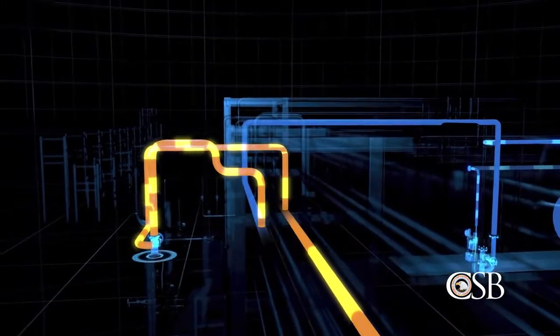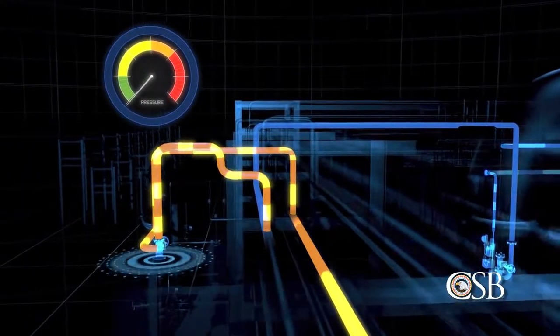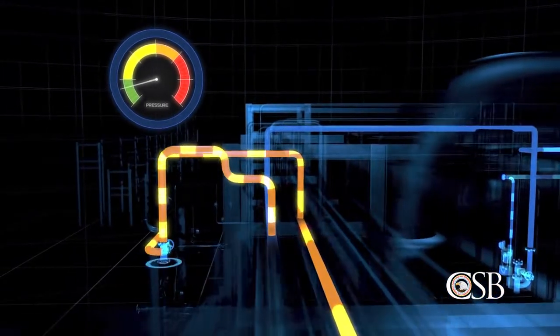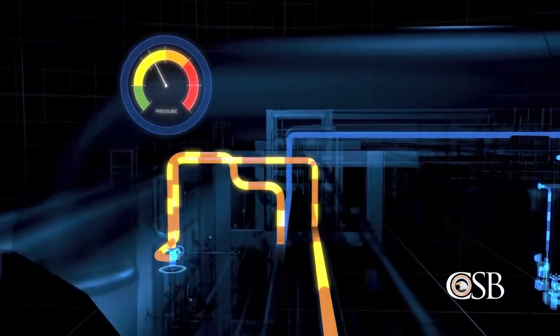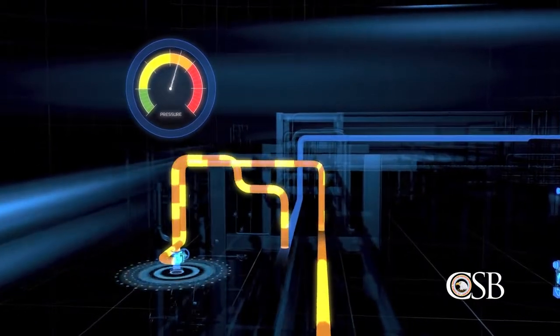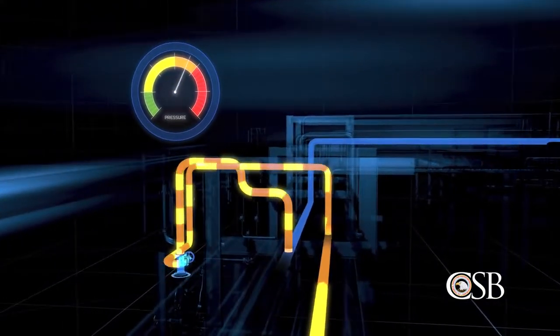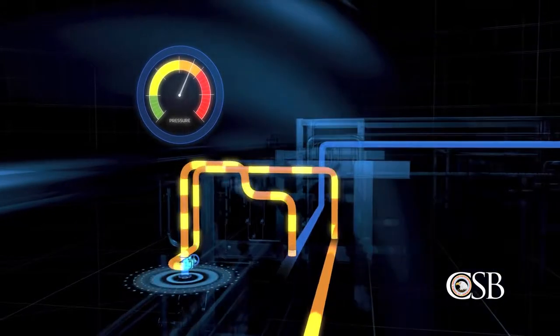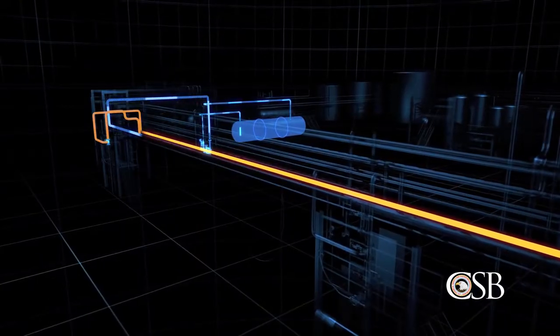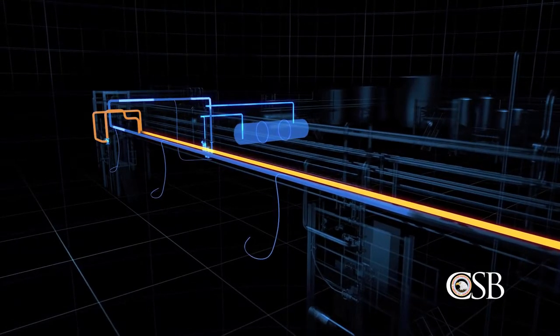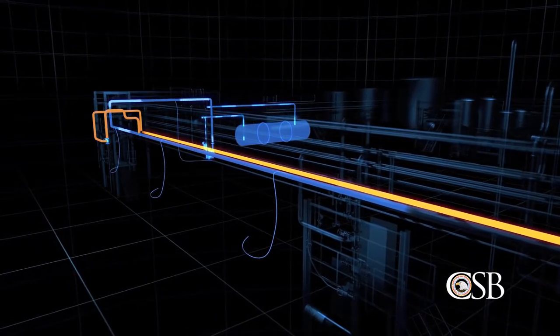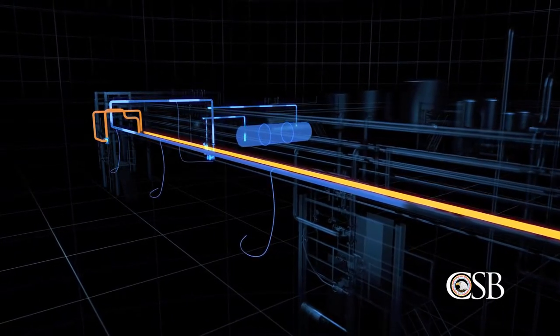When this occurred, pressure increased on the nearby gauge. Operators continued this process until the pressure at the first valve stopped increasing, at which point they determined that the blockage in that section of piping was cleared. Hoses were then moved to the next section of the feed line. But as it was nearing the end of the Friday day shift, the hoses were not turned on at that time.